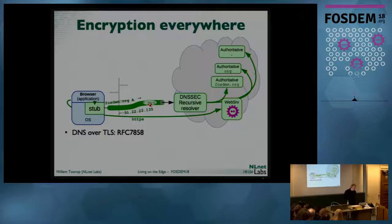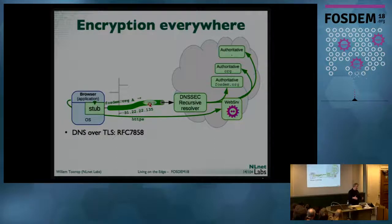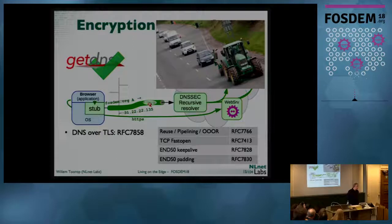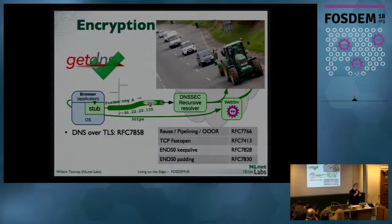Another motivation for libgetDNS and encryption everywhere is not just security or DNSSEC verification, but also privacy. libgetDNS has been developed alongside the DNS over TLS standard and can set up a TLS connection to the upstream recursive resolver. There are a whole bunch of RFCs dealing with various aspects — keeping the connection open, sending multiple queries on the same connection, handling out-of-order answers — all of which we've implemented in getDNS.